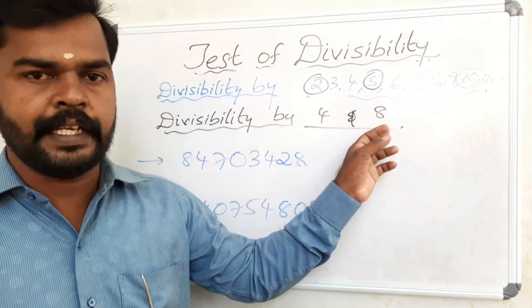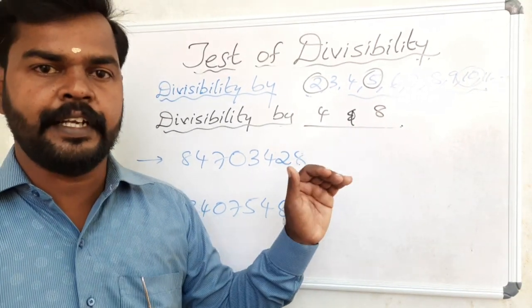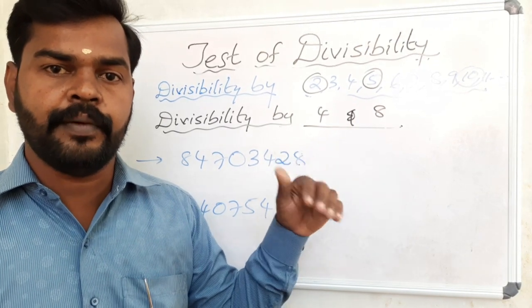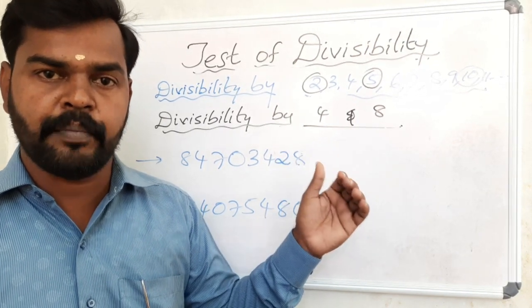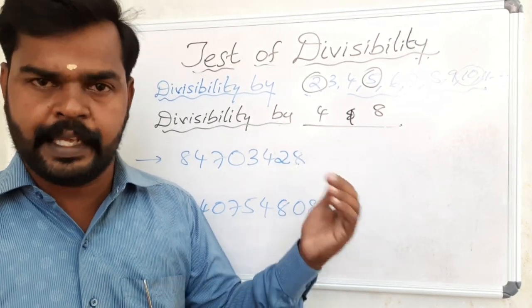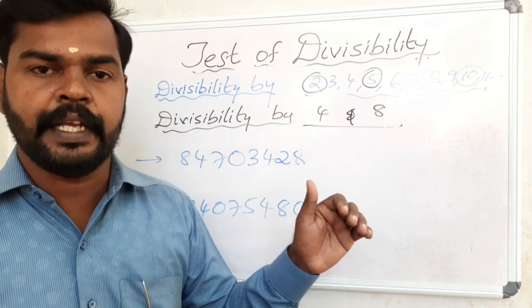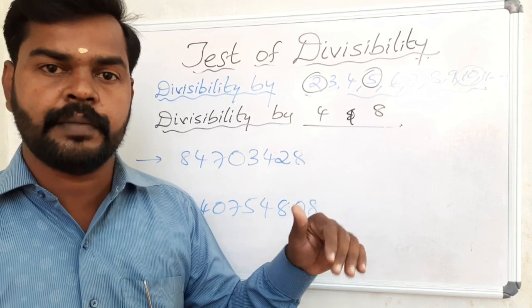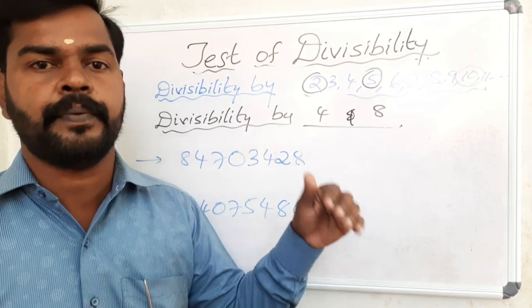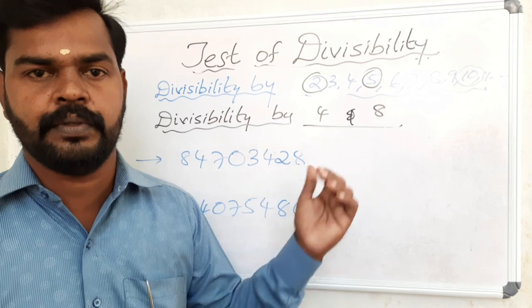Important note for 4 and 8: a number divisible by 4 may or may not be divisible by 8, but a number divisible by 8 is always also divisible by 4.